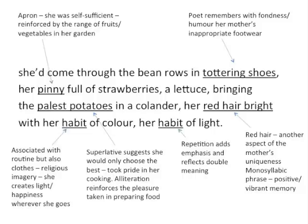And then we have the final line of the poem: 'her habit of colour, her habit of light.' We've got that repetition of the word 'habit', which is associated with routine but also clothes — it's religious imagery. So it gives us this sense that she creates light and happiness wherever she goes, and perhaps has a kind of religious dedication to looking after her house. That repetition also adds emphasis to the word and reflects the double meaning that it has.